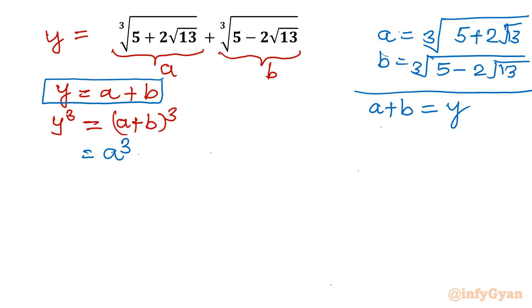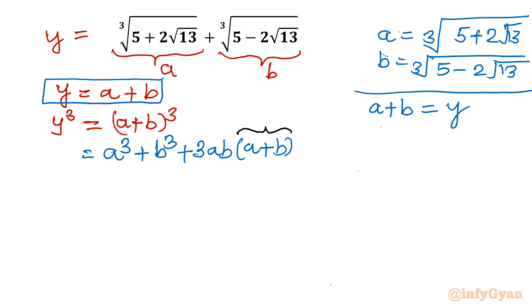Let us expand this formula. So (a + b)³ = a³ + b³ + 3ab(a + b). Now I will put in the values and calculate a·b separately.